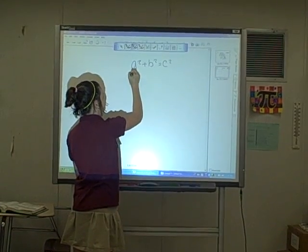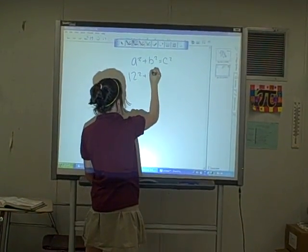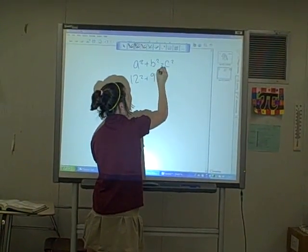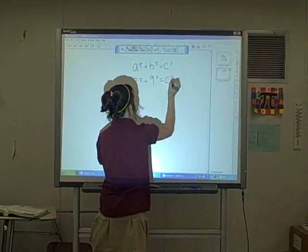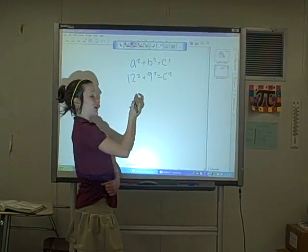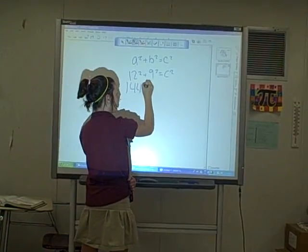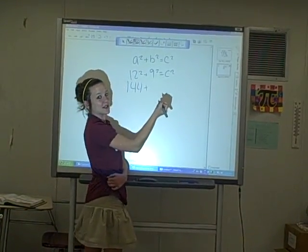a squared equals 12 squared, b squared is 9 squared. c squared. 12 times 12 is 144, and 9 times 9 is 81.